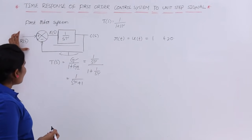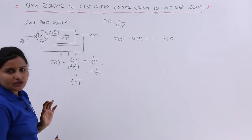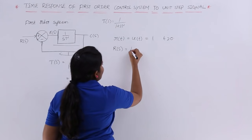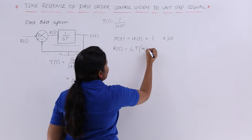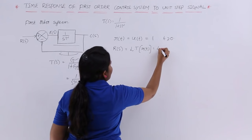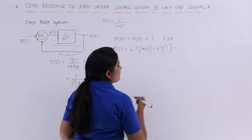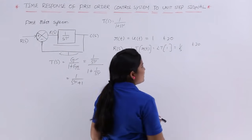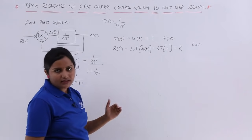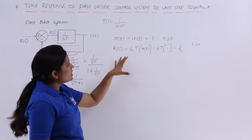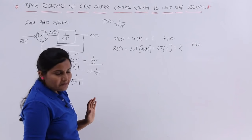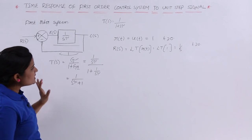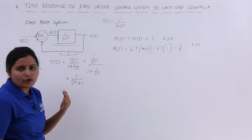Since we are working in the s-domain, we need R(s). R(s) is the Laplace transform of R(t). Since R(t) = 1 (unit step), the Laplace transform of 1 is 1/s. So R(s) = 1/s for t ≥ 0. Now we have R(s) and T(s), and we want to find the time response C(t).